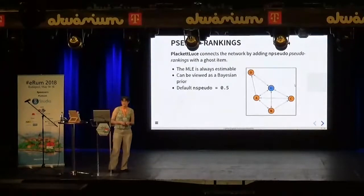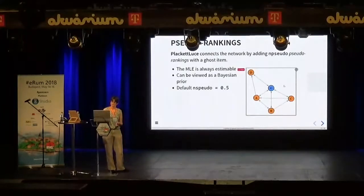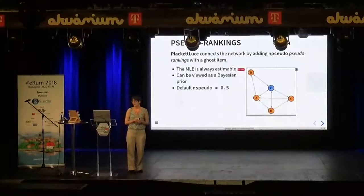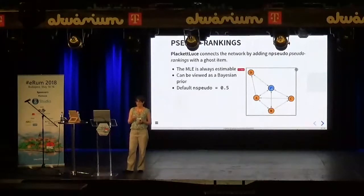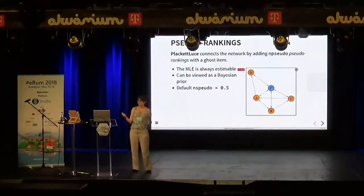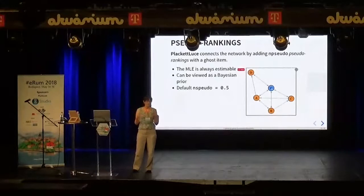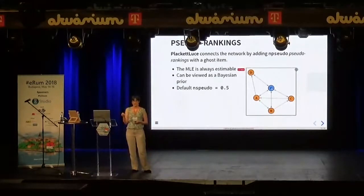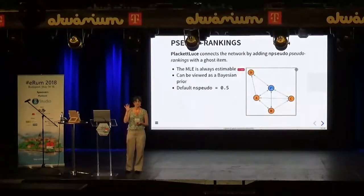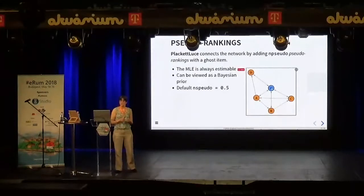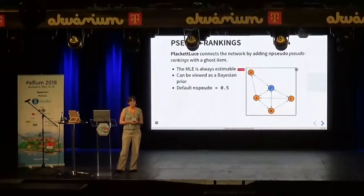The PlackettLuce package deals with that by introducing a ghost item G, and adding pseudo-rankings to the data where each item wins and loses against this ghost item. This means the network is always connected and the maximum likelihood estimate is always estimable. This can be viewed as a simple Bayesian analysis where the prior is that all items have equal worth. The default is to use half a pseudo-ranking — since frequencies appear in the model as weights, there's no reason it has to be an integer. Even if the network is connected, this has a beneficial shrinkage effect, reducing the bias of estimates.